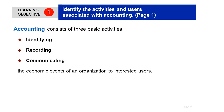Accounting consists of three basic activities: identifying, recording, and communicating. Identifying is when the company identifies financial transactions — in other words, all transactions that are related to money, such as paying salaries, buying goods, buying equipment, selling new items, or selling services. Any activity that involves money should be identified.